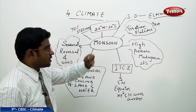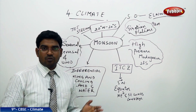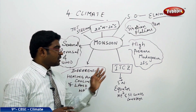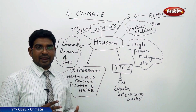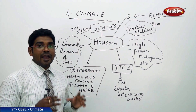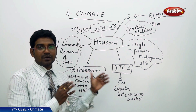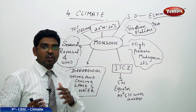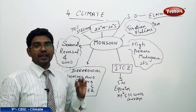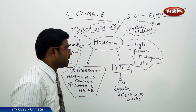The third major factor is the high pressure in the Madagascar region. Madagascar is found in the Indian Ocean, away from the Indian land. From about 20 degrees south, high pressure systems move northward, carrying enormous energy and moisture towards India, causing monsoon rains in India.